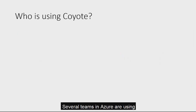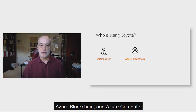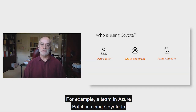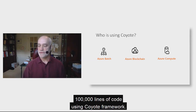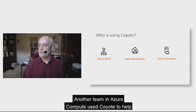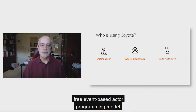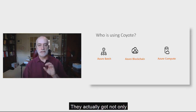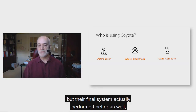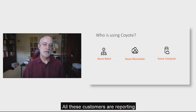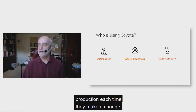So who's using Coyote? Several teams in Azure are using Coyote to build their production services already, including various teams in Azure Batch, Azure Blockchain, and Azure Compute. For example, a team in Azure Batch is using Coyote to check the correctness of their failover logic, and that team has over 100,000 lines of code using the Coyote Framework. Another team in Azure Compute used Coyote to help them move to a much more responsive and asynchronous design, getting not only a system they could debug more easily, but one that actually performed better as well. All these customers report significant improvement to productivity and confidence that their systems are ready for production each time they make a change.